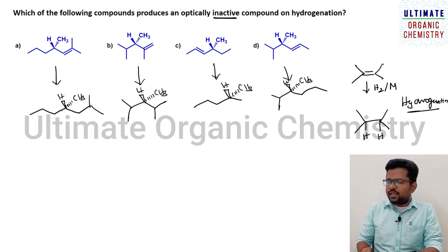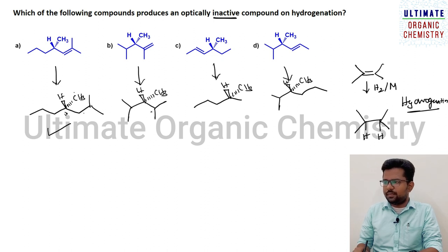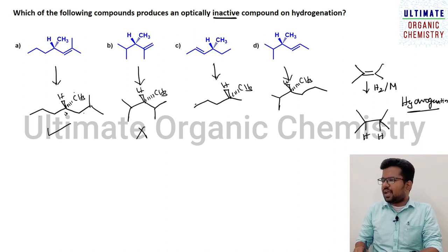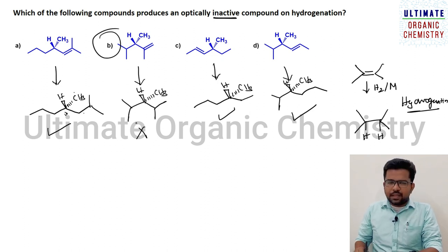Checking chirality of all four products: the first product has four different groups, so it is optically active. The second product has two same isopropyl groups — same groups are present, so it is optically inactive. Checking option C: four different groups including ethyl, propyl, isopropyl, hydrogen, and methyl — optically active. The right answer is option B, which gives an optically inactive product.